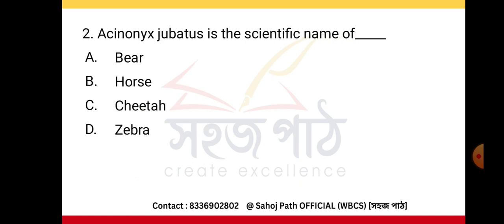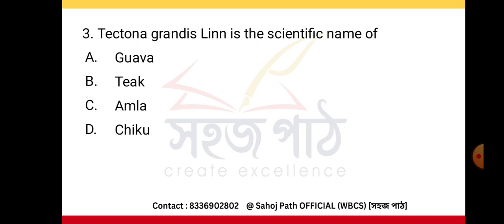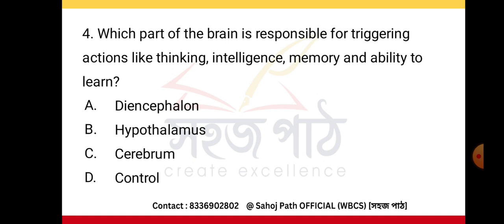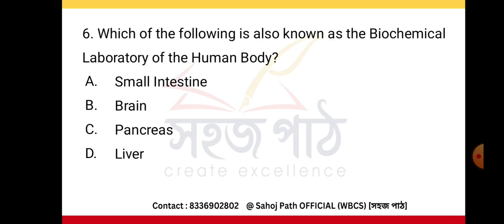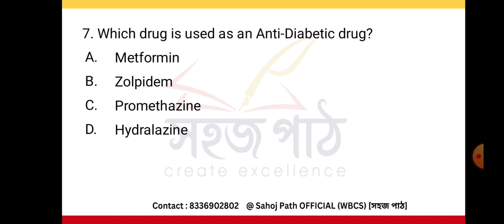Acinonyx jubatus is the scientific name of cheetah. Tectona grandis is the scientific name of teak. Which part of the brain is responsible for triggering actions like thinking, intelligence, memory, and ability to learn? The cerebrum. What is the source of energy and materials in human beings? Food. Which of the following is also known as the biochemical laboratory of the human body? The liver. Which drug is used as an anti-diabetic drug? Metformin.